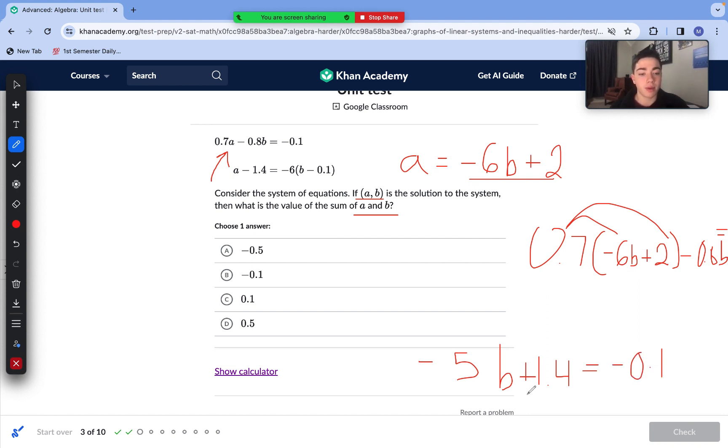To isolate our b, we subtract both sides by 1.4. So -0.1 minus 1.4 is -1.5. Now we have -5b = -1.5. Now we can divide both sides by -5 to isolate our b, and -1.5 divided by 5 is 0.3 positive.